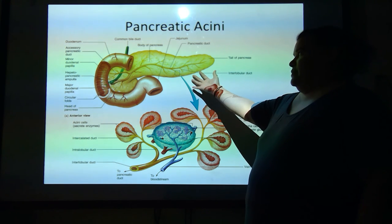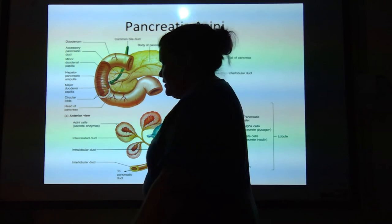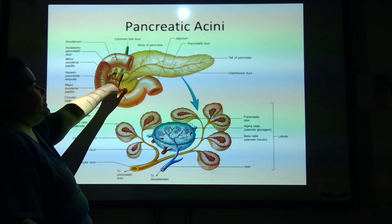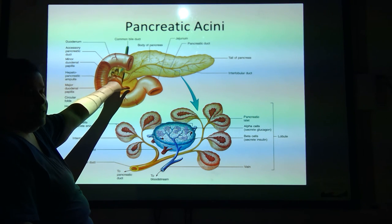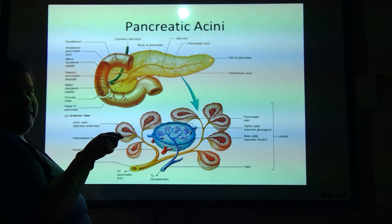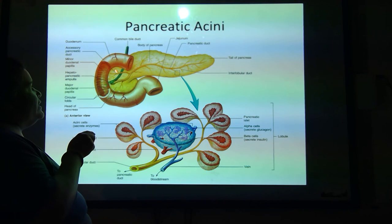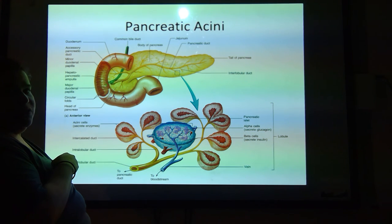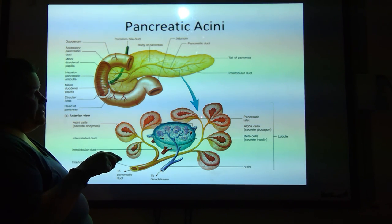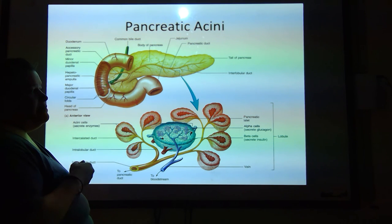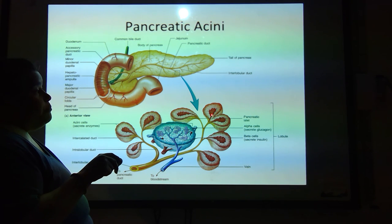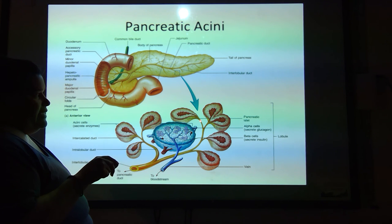Then we have the pancreas. The pancreas is again one of those things that delivers product into the beginning of the small intestine. You've got the head of the pancreas, the body of the pancreas, and the tail of the pancreas at the end. The head of the pancreas looks like it's trying to snuggle into the duodenum of the small intestine. Dead center, you have this duct. These acinar cells here are actually making all of the pancreatic enzymes that help us to digest our food — so they're pouring that into these ducts.